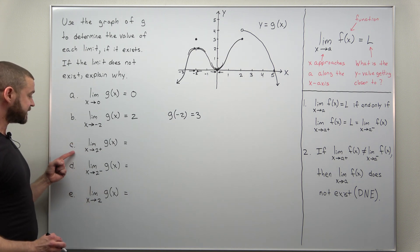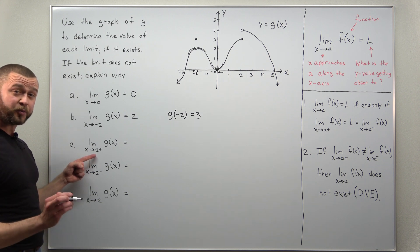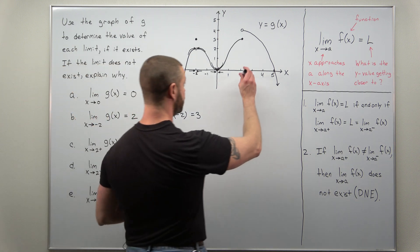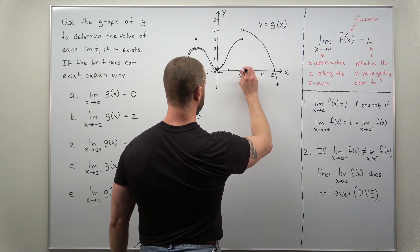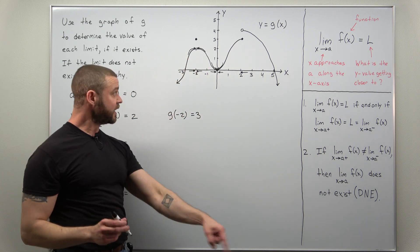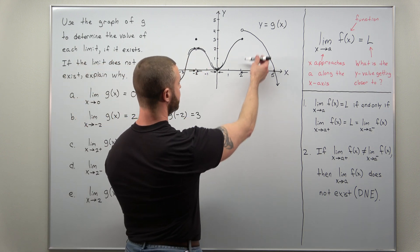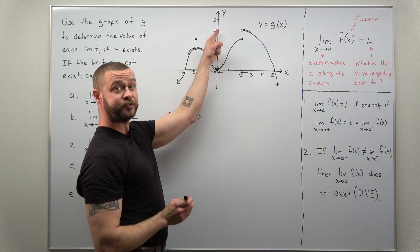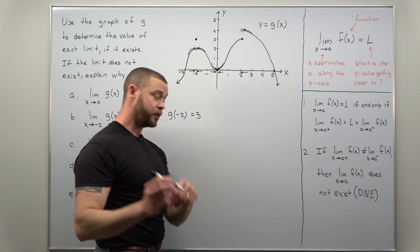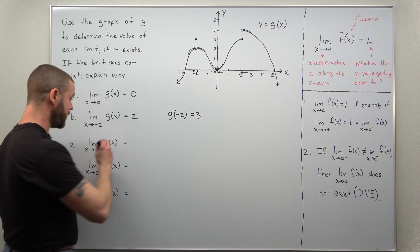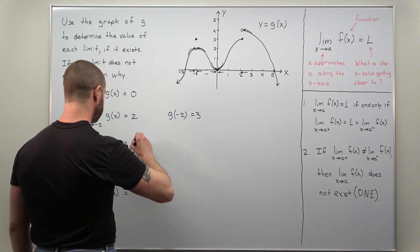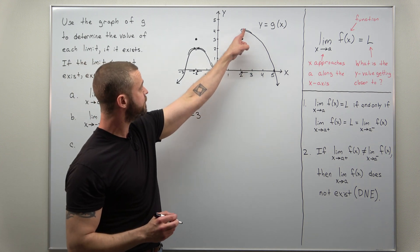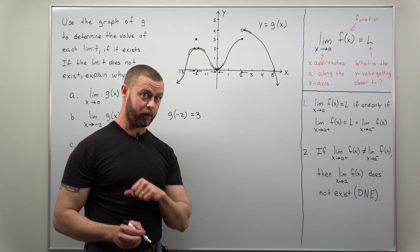Next, part C: we're letting X approach two but only from the right side. As you get closer to two from the right, you follow this part of the graph and it's getting close to the Y value four. So the limit as X approaches two from the right exists, and that single value is four.